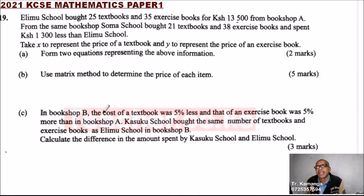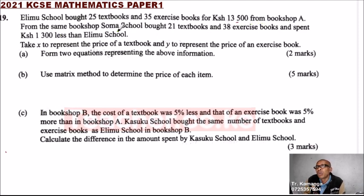Question number 19. Erimu school bought 25 textbooks and 35 exercise books for 13,500 Kenyan shillings from bookshop A. From the same bookshop, Soma school bought 21 textbooks and 38 exercise books and spent 1,300 more than Erimu.